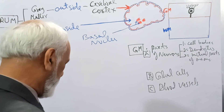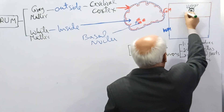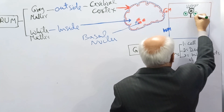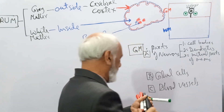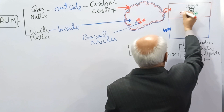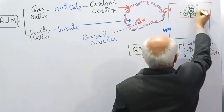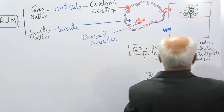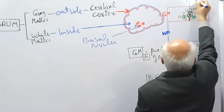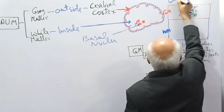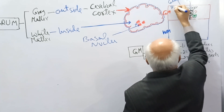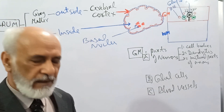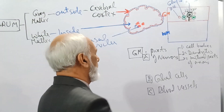These neurons are supported by glial cells — special supporting cells. There are different types of glial cells and there are blood vessels. This is the summary of the structure of the cerebral cortex, grey matter.